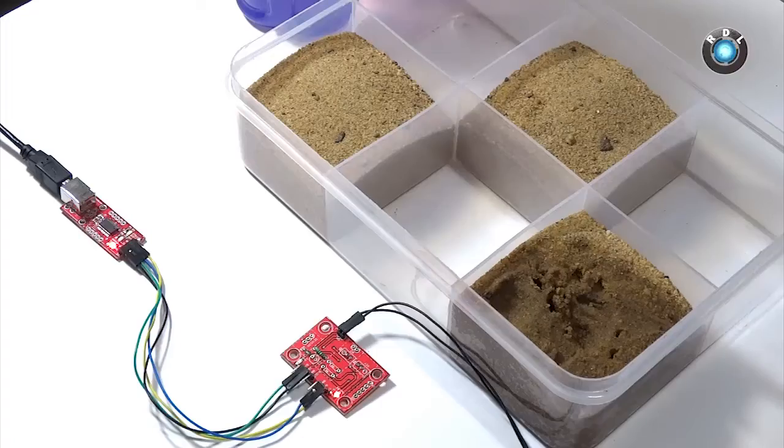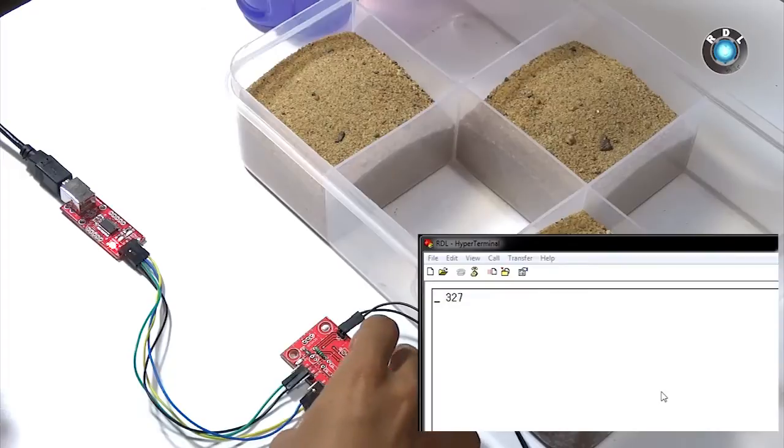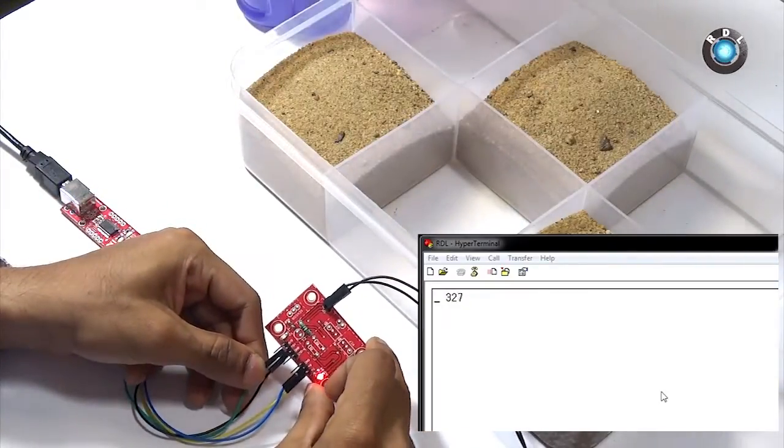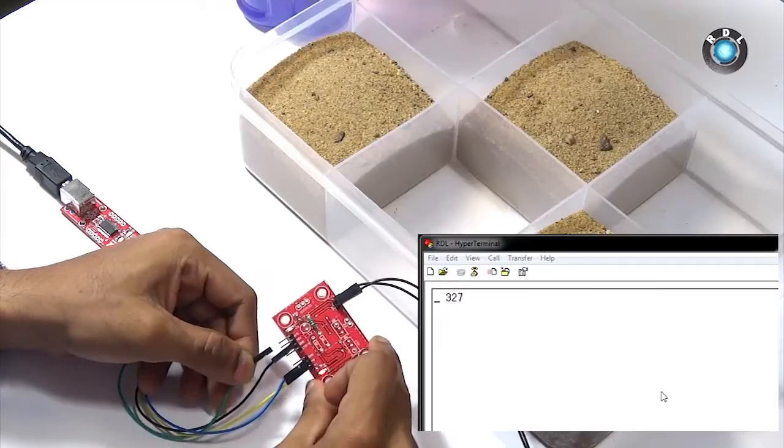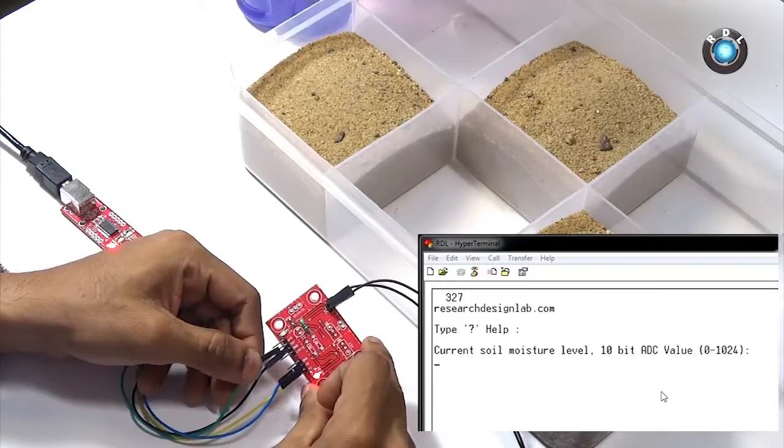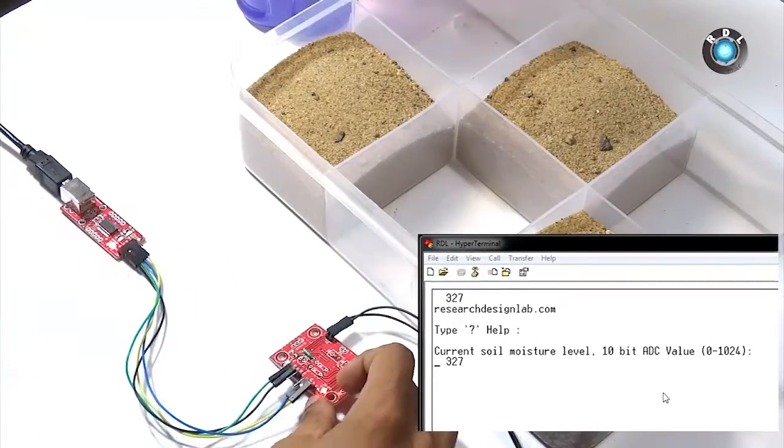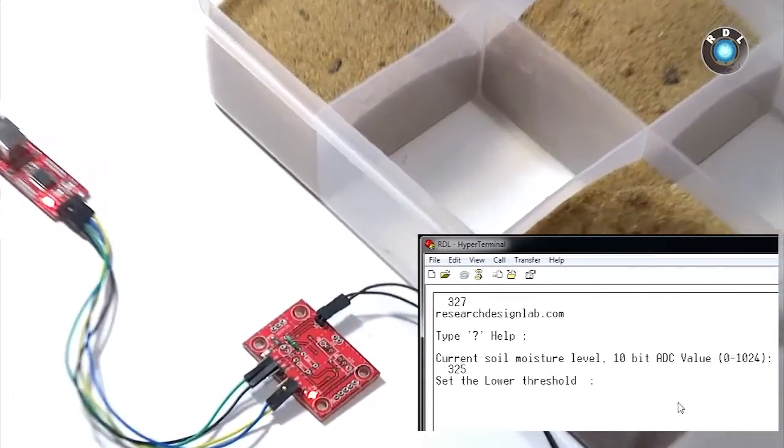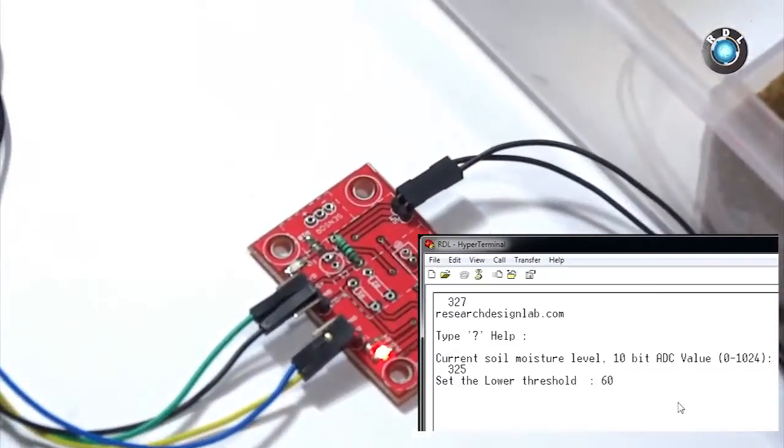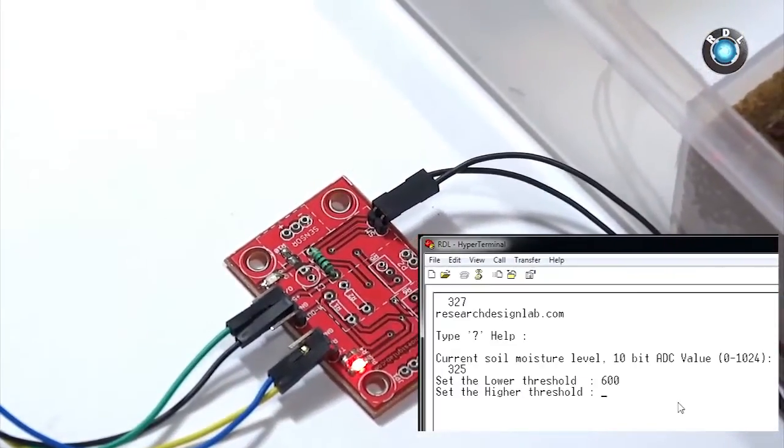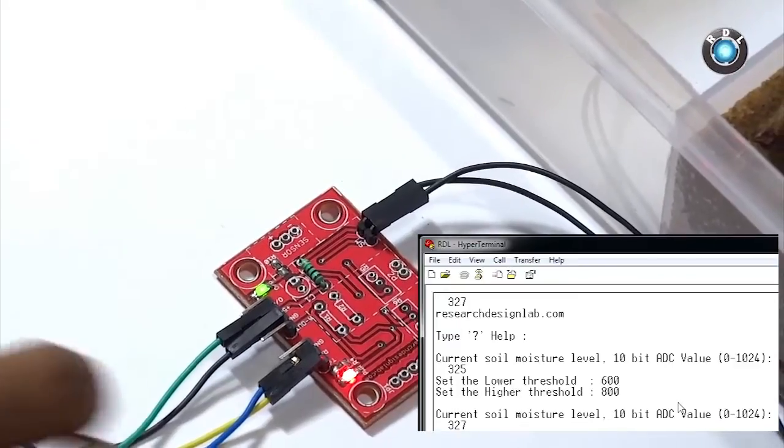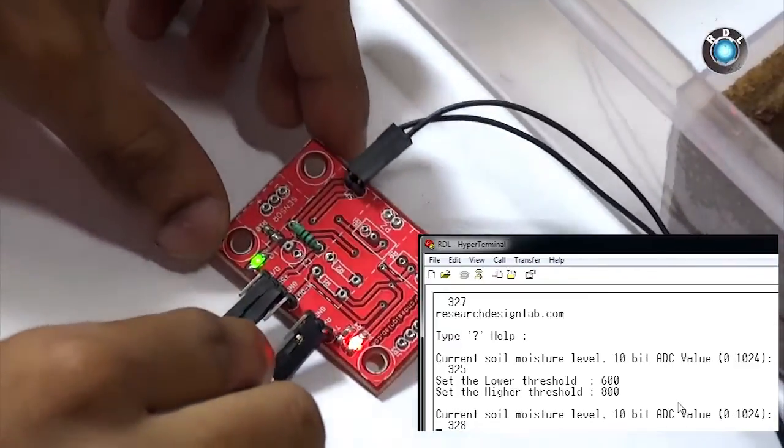Next up I will be demonstrating how to use the digital out pin on this board. Let me just reset the board by removing the power cable, that is the plus 5 volt, and reconnect it back. In the serial window here you can see some series of instructions popping up. Press shift and question mark key on your system keyboard. Set your lower threshold to 600, set your higher threshold value to 800. Notice the output LED here which has been turned on.